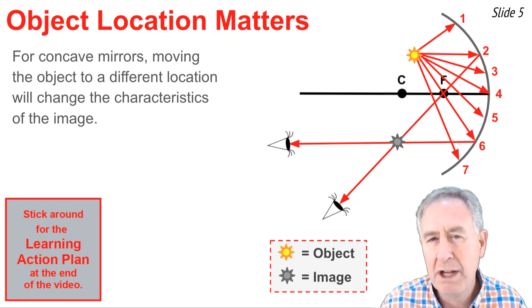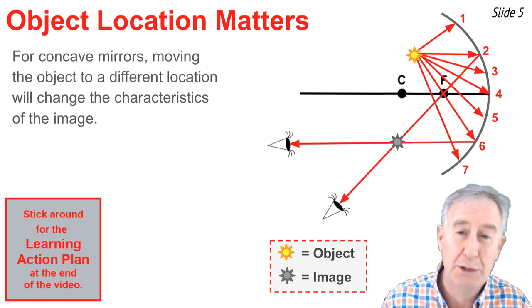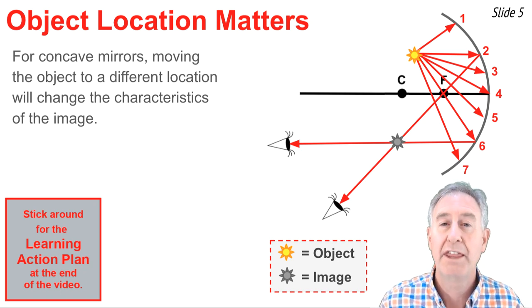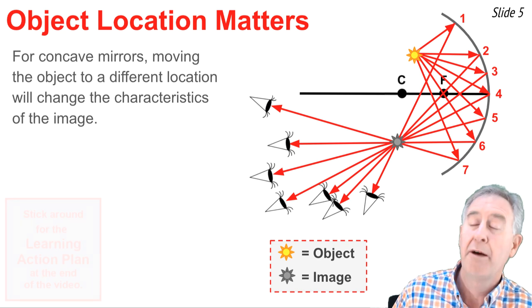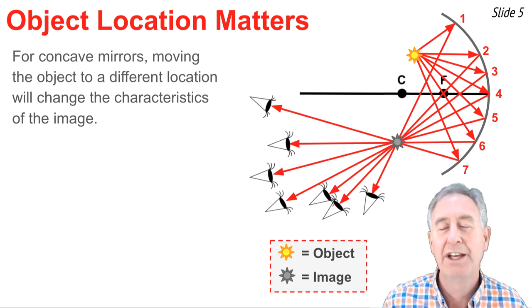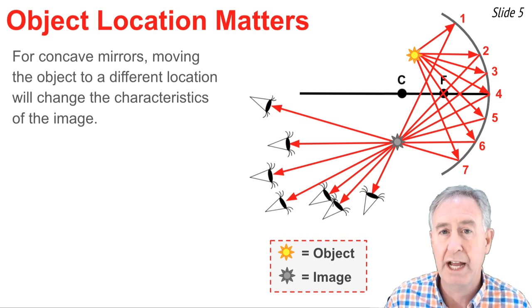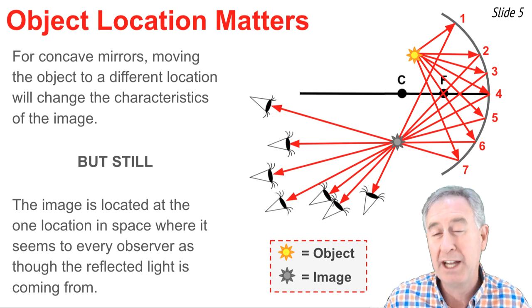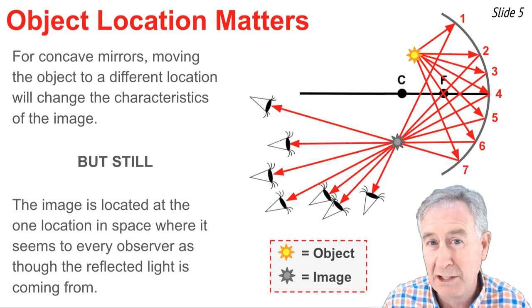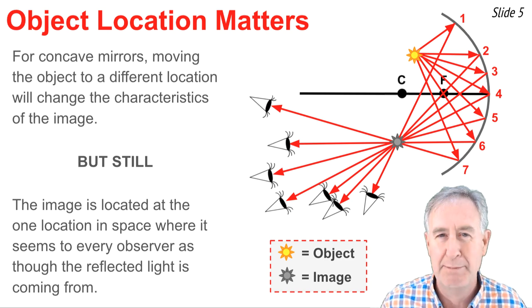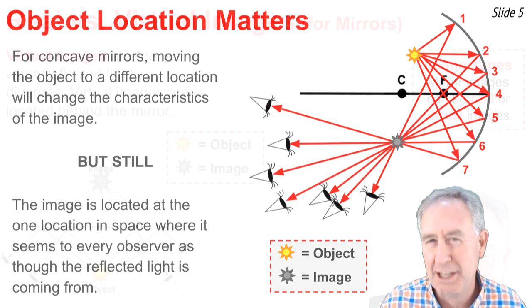So we know that every observer is going to sight along a different line but at the same image location, which means for the remaining five incident rays, they will reflect as shown passing through this particular image location. So here are seven observers now. Each one of these observers is sighting along a different line, but is sighting at one location in space where it seems that every reflected ray is coming from. And that location is the image.